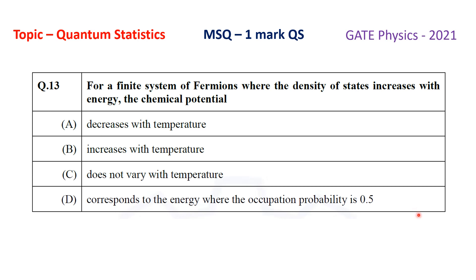To solve this question we need to know three things: number one, what is the distribution function or statistics applicable for a fermionic system; number two, what is the dimension of this fermionic system — one-dimensional, two-dimensional, or three-dimensional — such that the density of states increases as a function of energy; and number three, for that particular dimension, how does the chemical potential vary with temperature.